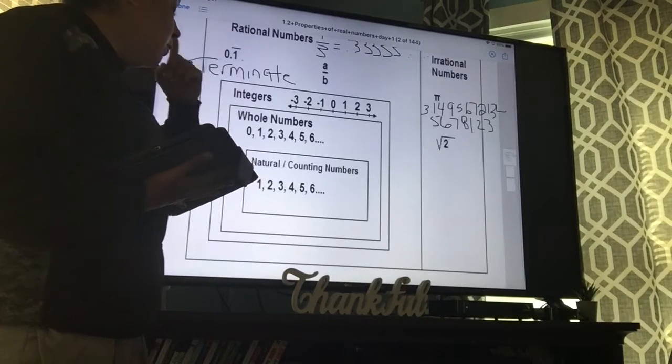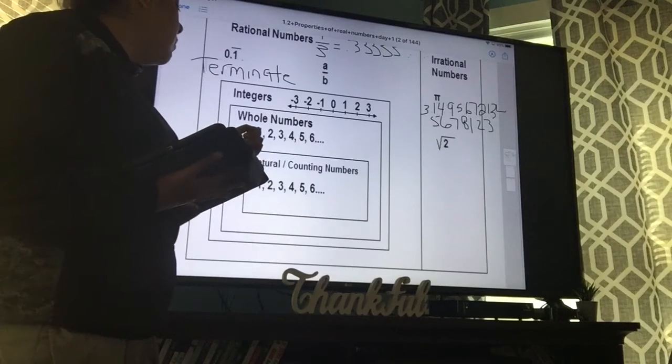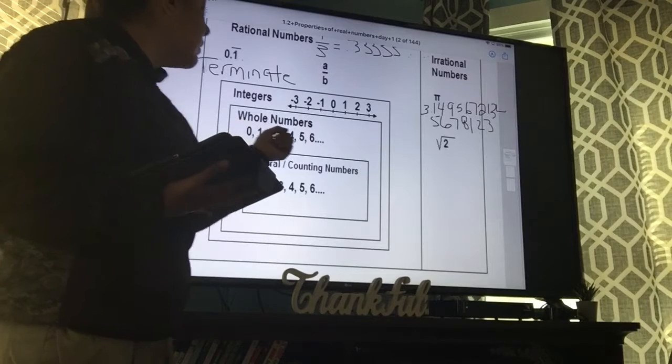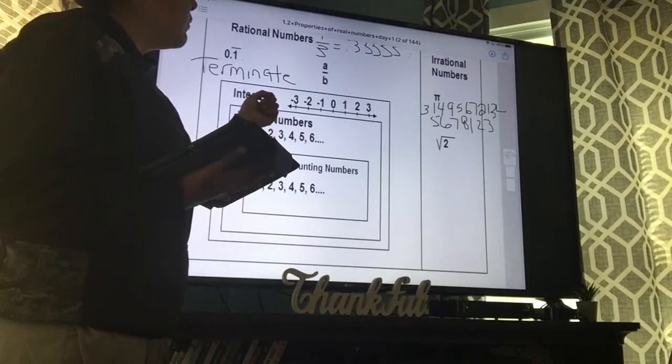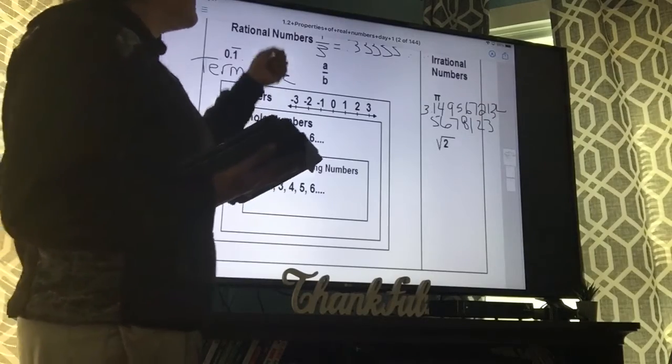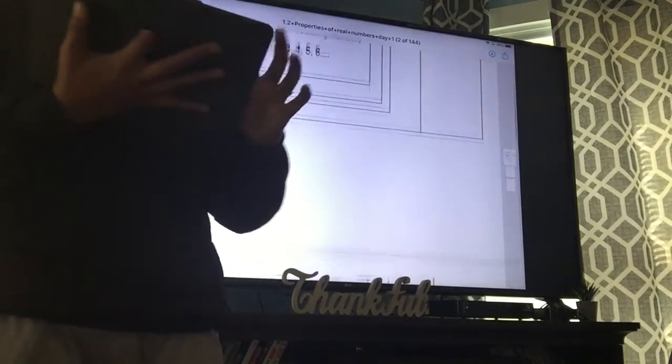This one, whole, so it's going to be no. Whole is no because that's zero and only the positives. Is it an integer? Yes, so negative four. If this one's a yes, then that makes this one a yes. So it's an integer and a rational.